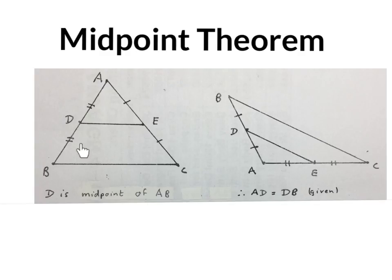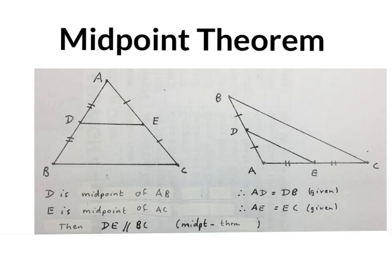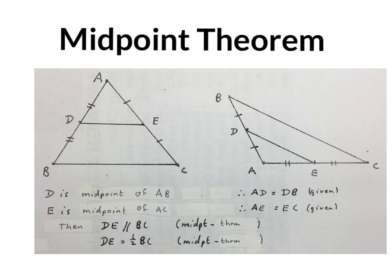When seeing a sketch like this, you will either write 'D is the midpoint of AB' or you will write 'AD is equal to DB — given.' Then you will write either 'E is the midpoint of AC' or 'AE is equal to EC — given.' Then you write: 'DE is parallel to BC — midpoint theorem' and 'DE is half of BC — midpoint theorem.'